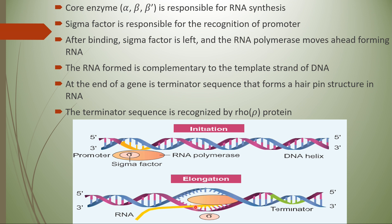The newly formed RNA is complementary to the template strand of the DNA. For example, where guanine is in the DNA strand, cytosine appears in the RNA; where adenine is in the DNA, uracil is formed in the RNA instead of thymine. At the end of the gene is a terminator sequence that forms a hairpin structure in the RNA. The terminator sequence is recognized by the rho factor or rho protein, which signals RNA polymerase to stop transcription. This concludes the outline of the transcription process.